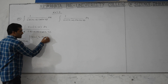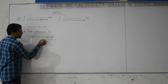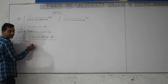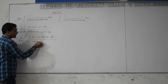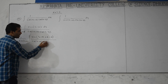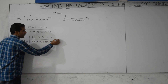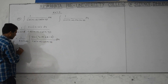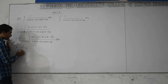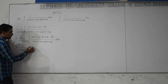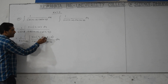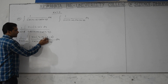Inside sin(b minus a), add plus x and minus x. So we write sin of (x minus a) minus (x minus b), which expands the numerator. That is 1 by sin(b minus a), integration of sin[(x minus a) minus (x minus b)] divided by cos(x minus a) into cos(x minus b) dx.